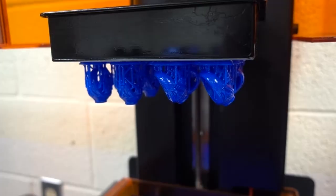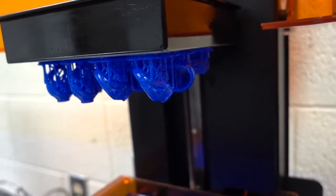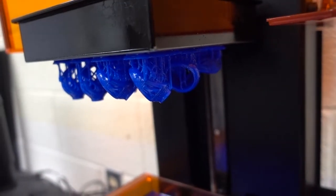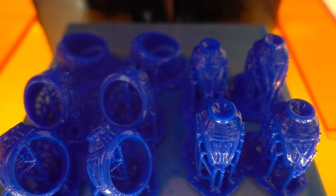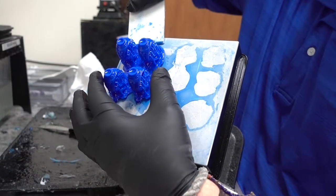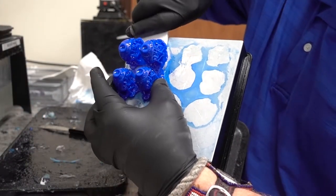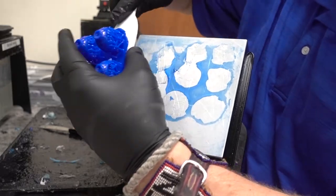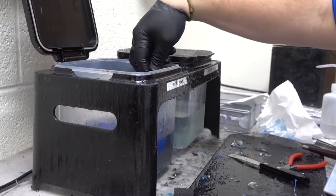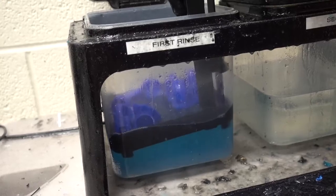You can see all the rings are printed. We always print a couple extras to have on hand when we make the ring again and resize them. We have to peel it away from the build plate and clean them off.